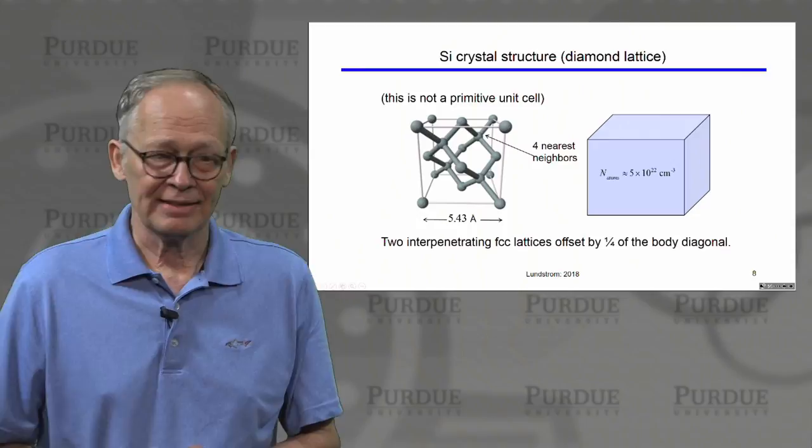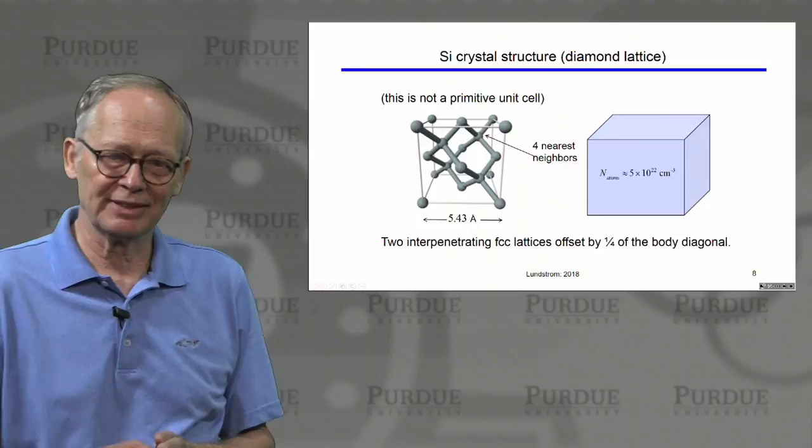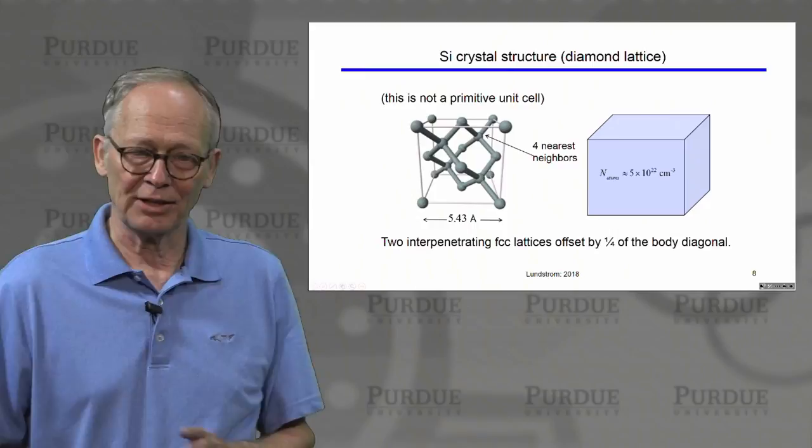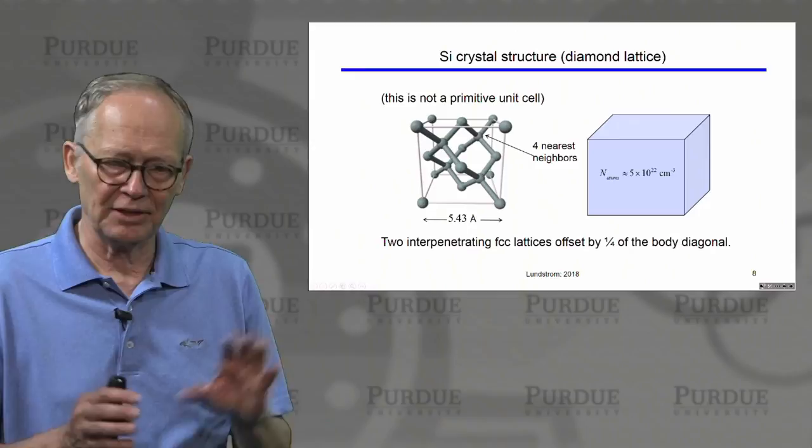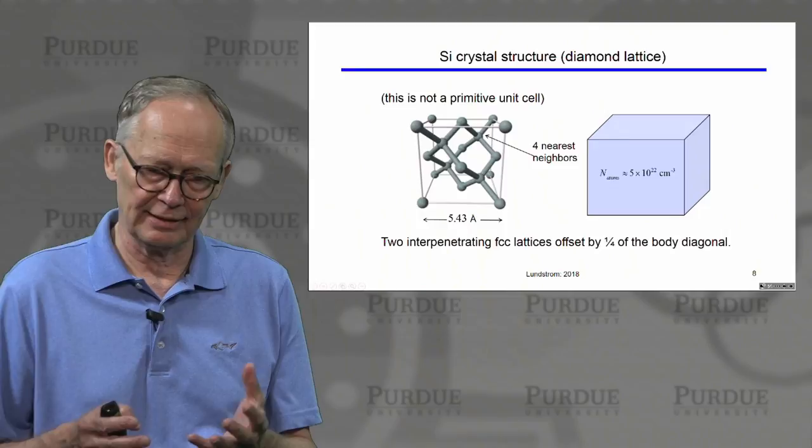If you're good at visualizing things in three dimensions, you might see that this is actually two interpenetrating face-centered cubic lattices offset by one quarter of the body diagonal of the cube. If you don't see that, don't worry — it won't be important for us. But we should understand this lattice because it represents not only silicon but other common semiconductors as well.